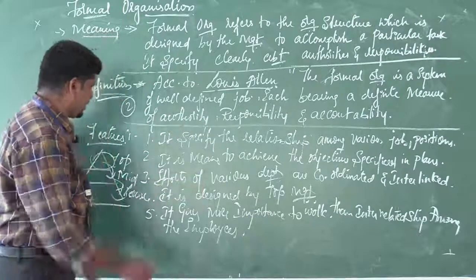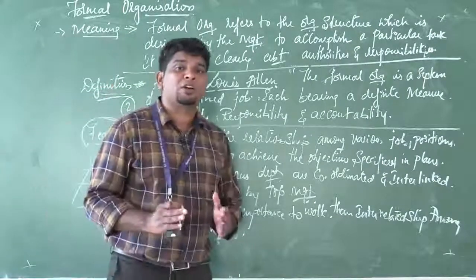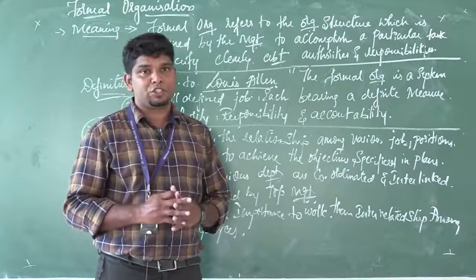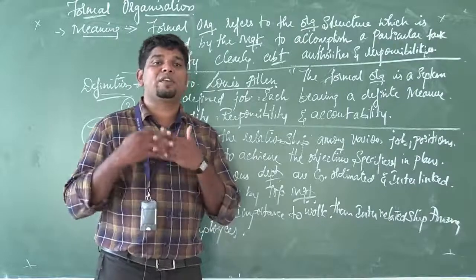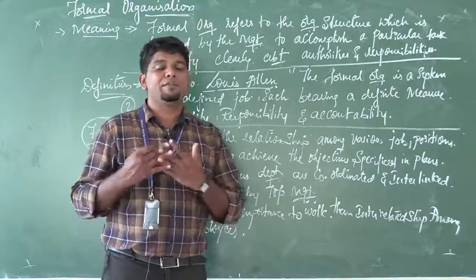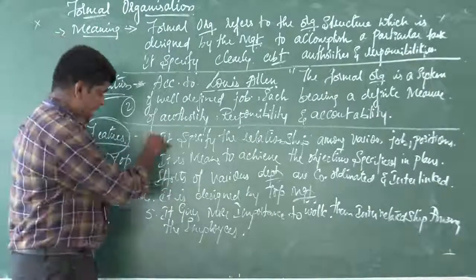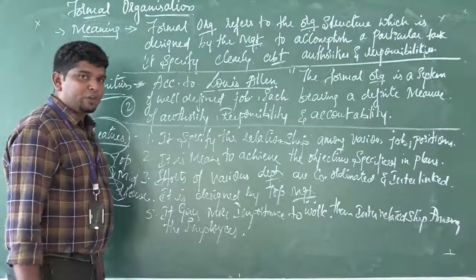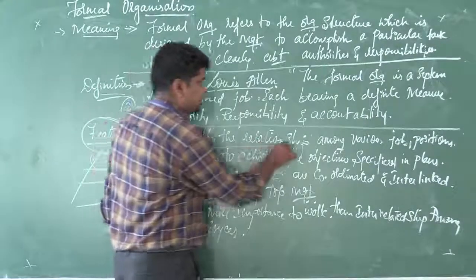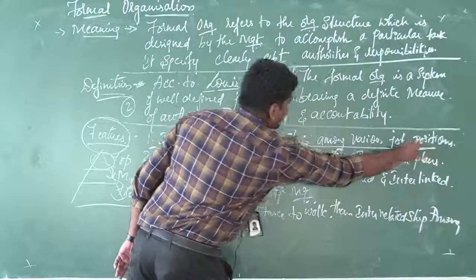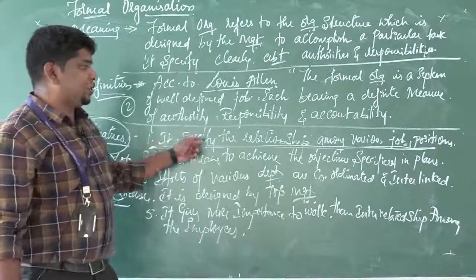Next, how can we know whether it is a formal organization or informal organization — how to identify it? So the features: I have five features of formal organization. The first and foremost is it specifies the relationship among various job positions.